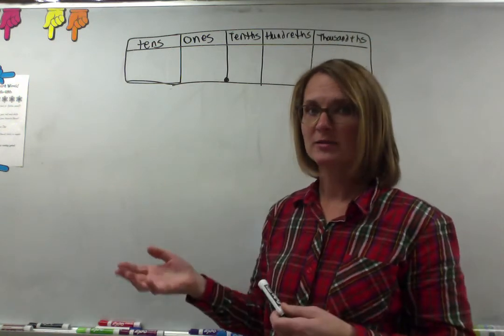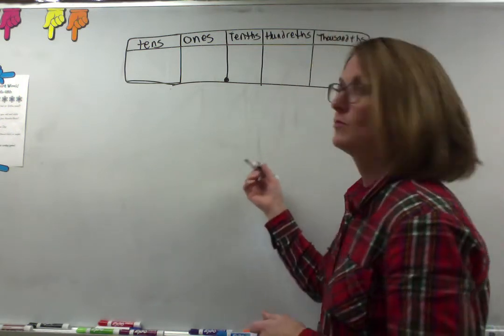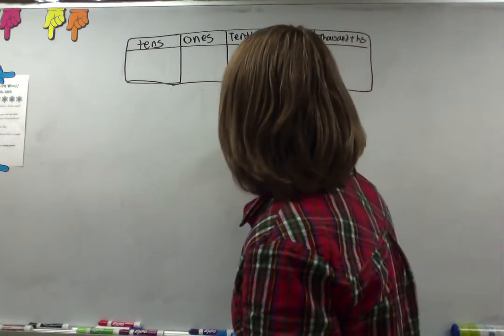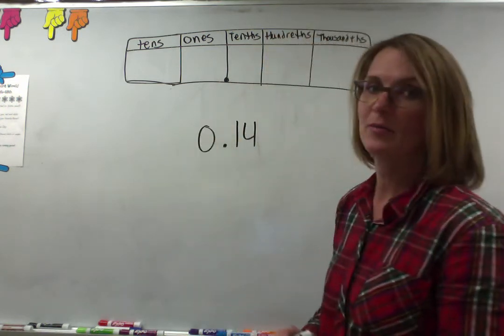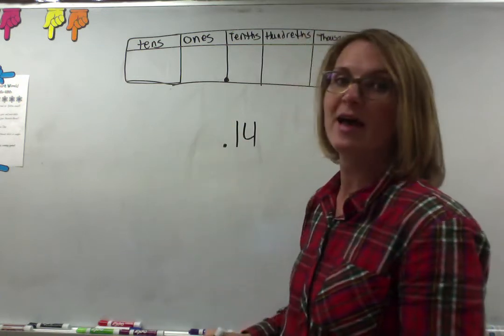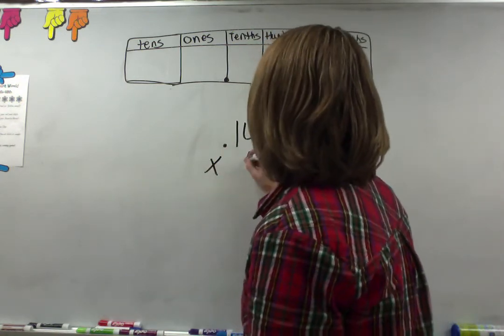Yesterday we used models. I'm going to show you how those models transfer to regular multiplication. So for example, one of the problems we did yesterday was 0.14. You can put a zero there or not, it's still the same thing. Let's get rid of that zero because it's going to be extra work. And we multiply it by 5.